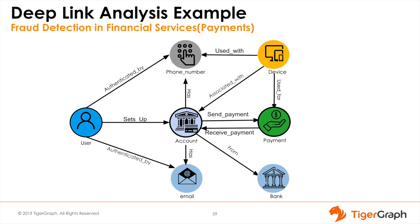A user creates a payment account and provides their email and phone number as part of registration, which is used to authenticate the user. The user also links sources of funds such as a bank account, a debit card, or a credit card as part of the setup. The user then initiates each payment using a device such as a desktop, laptop, tablet, or mobile phone, and the payment is received by another user in their account. This is a typical schema for money transfer or payment services such as Intuit QuickBooks payments or peer-to-peer services such as Venmo or PayPal.